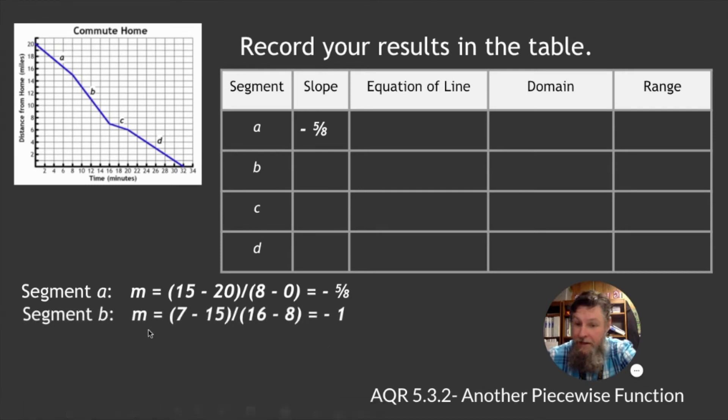Equation of the line, segment B, slope is 7 minus 15, because we went to 15. It's 15. I apologize. It's the Y value, not the X value, because 16 minus 8. We went from 8 to 16 horizontal, and then from vertically, we went from 15 all the way down to 7. So, we went and it's a negative 1. We put that in the slope section.